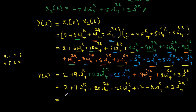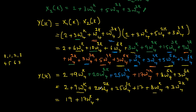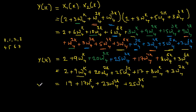Now combining all terms: constant terms 2+17=19; W4^k terms 9+8=17·W4^k; W4^(2k) terms 20+3=23·W4^(2k); and only one W4^(3k) term which is 25·W4^(3k). So the final expression for Y(k) is: Y(k) = 19 + 17·W4^k + 23·W4^(2k) + 25·W4^(3k).